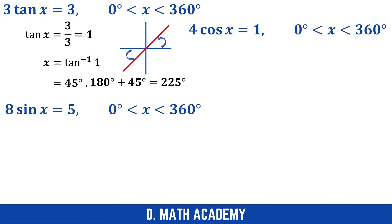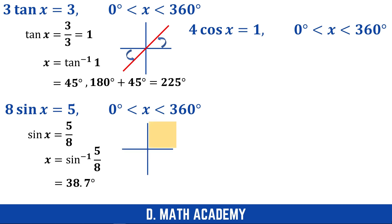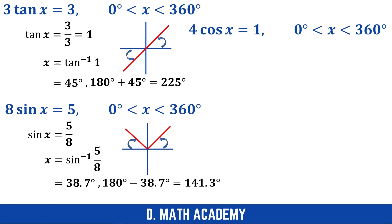Moving on: sin x = 5/8. Since 5/8 is positive, sine is positive in the first two quadrants (0 to 180). So x = sin⁻¹(5/8), and through your calculator you'll get 38.7 degrees immediately. However, this is not the final result — you also need the second quadrant value. The second result is 180 − 38.7 = 141.3 degrees.